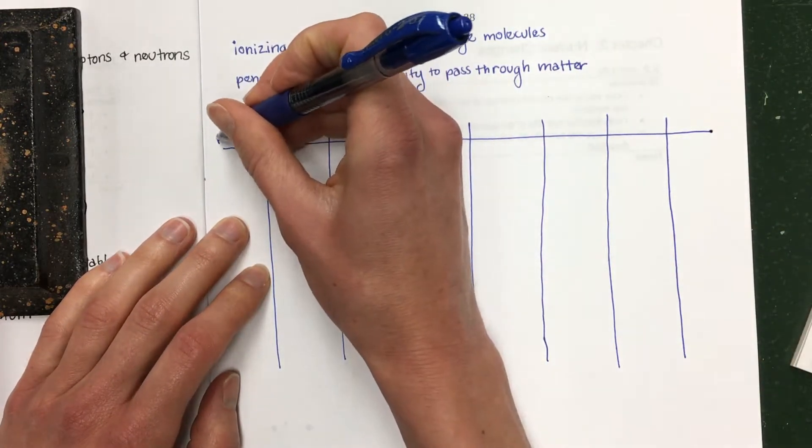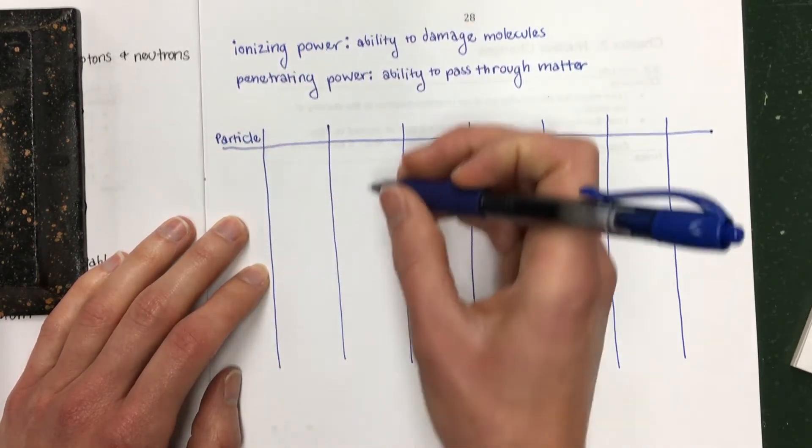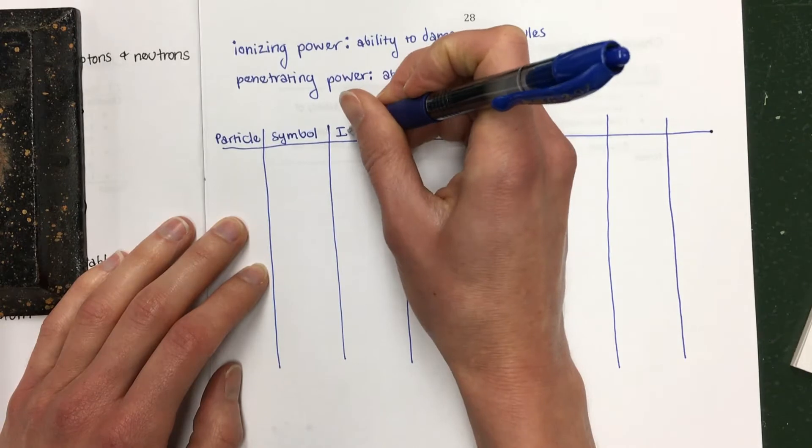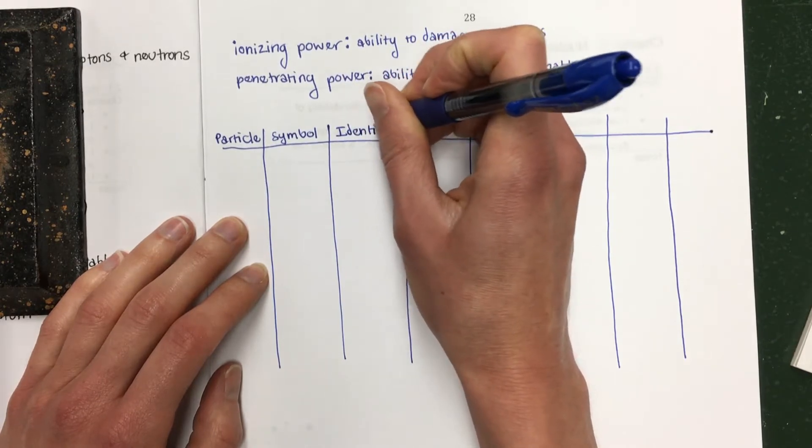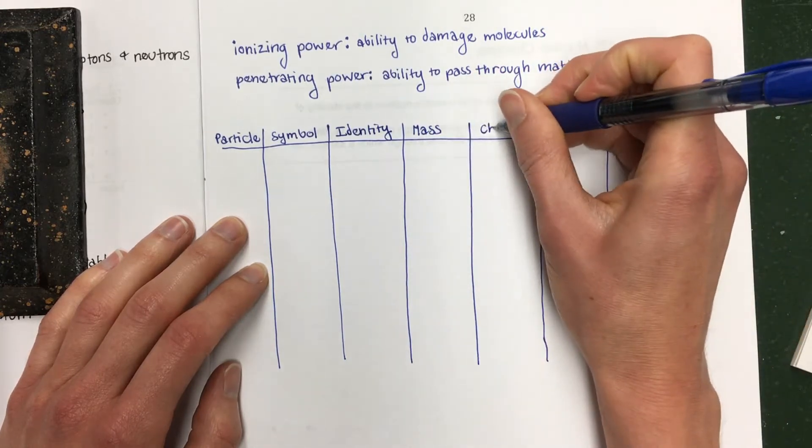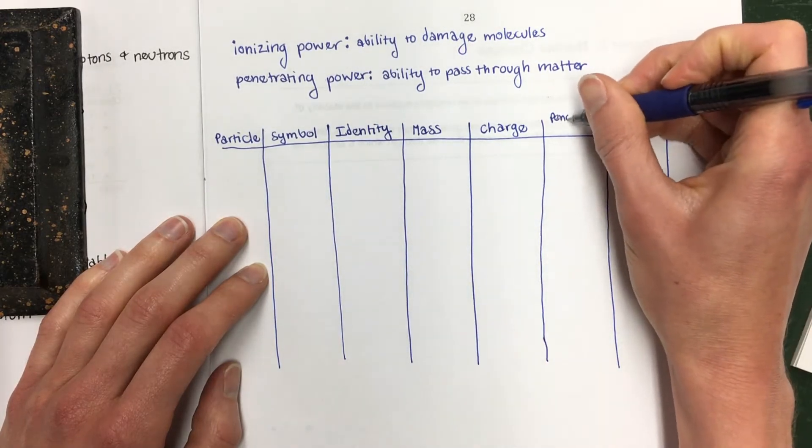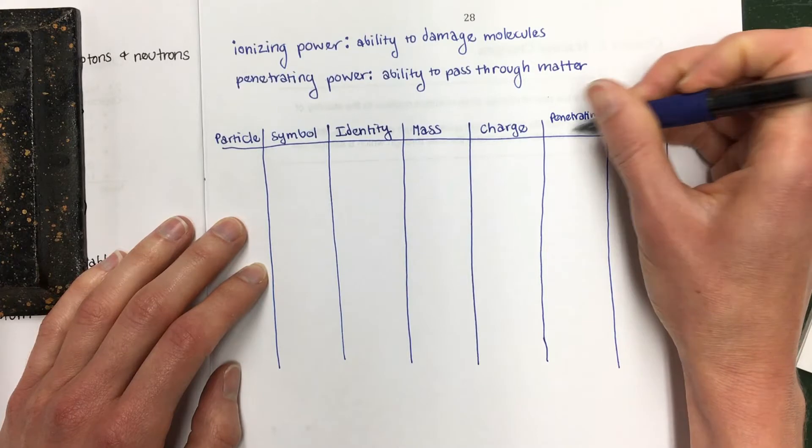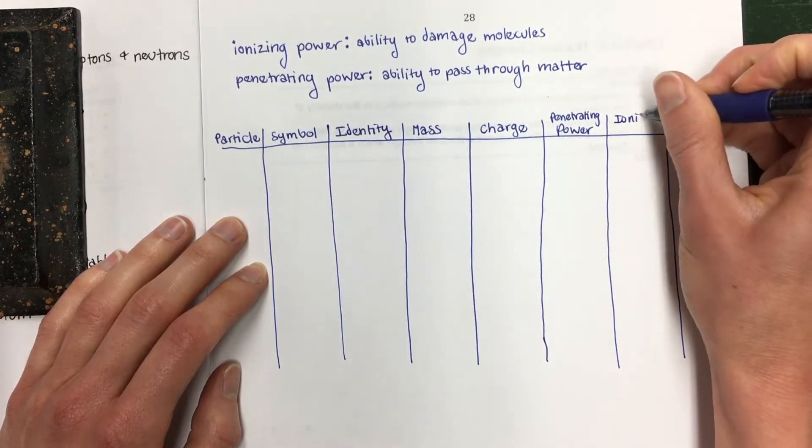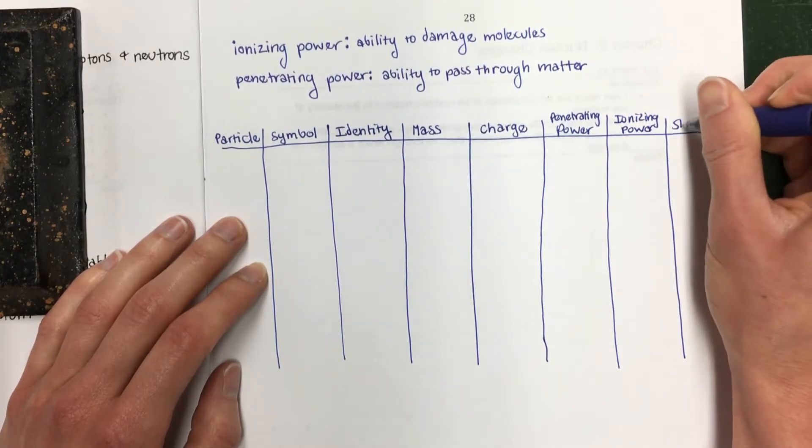On the top here we're going to title this. One is going to be particle. This is going to be symbol. This is going to be identity, mass is right here, charge, penetrating power, ionizing power, and shielding.